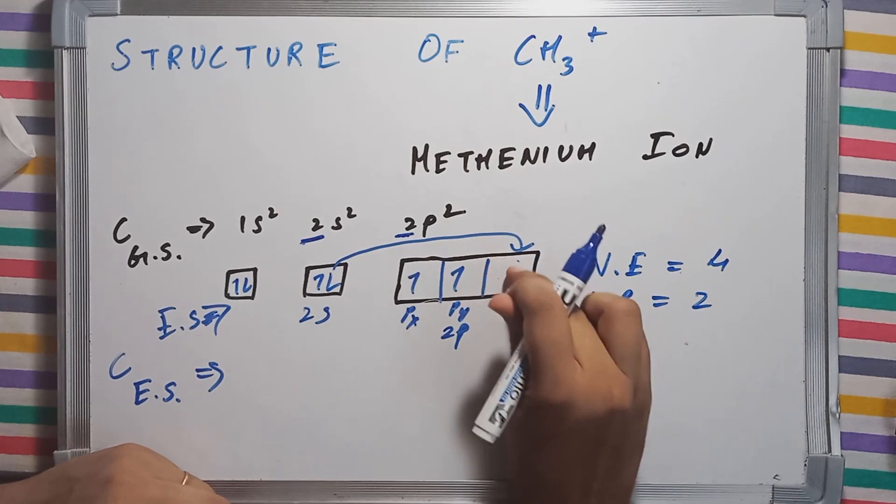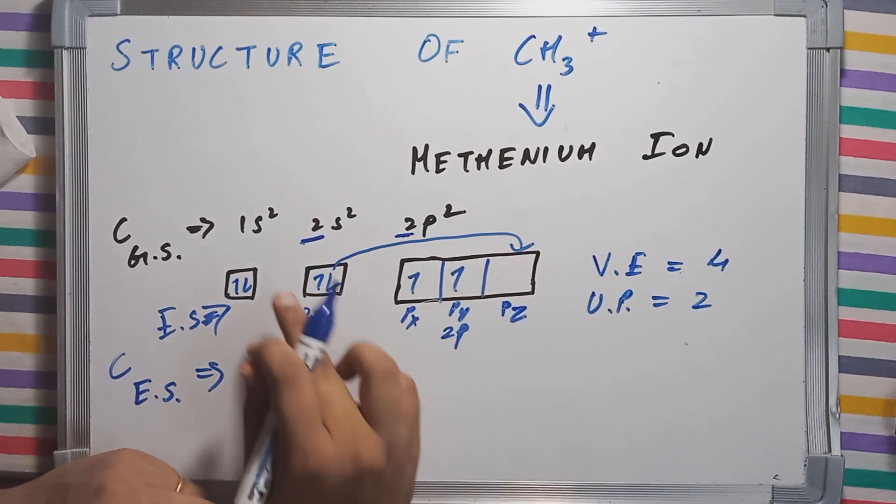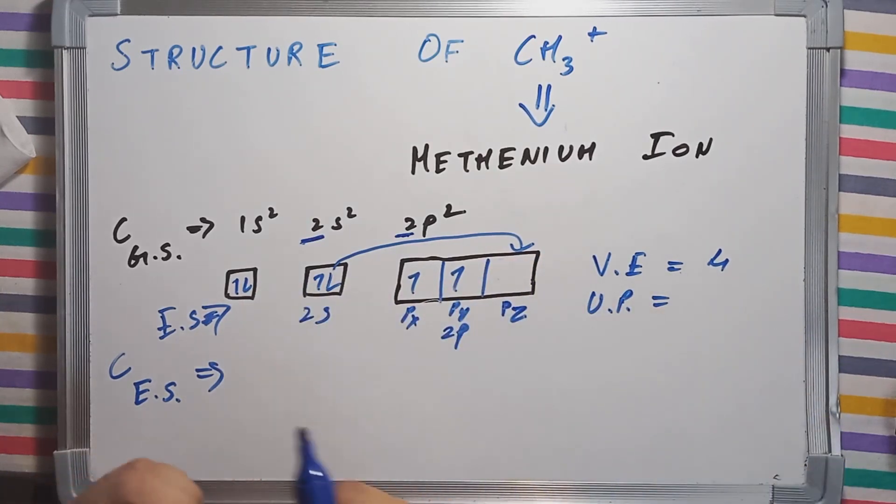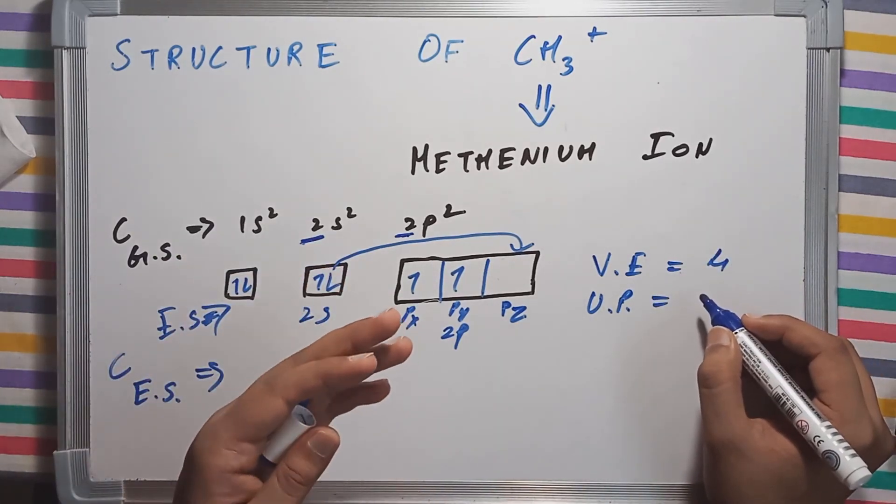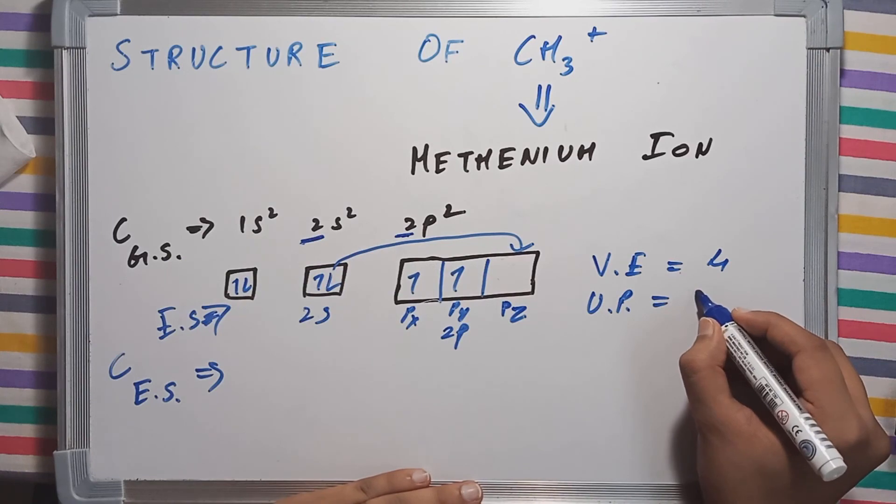Because this is in ground state. But as I said, carbon does not make bonds in ground state. It makes bonds when it is in excited state.